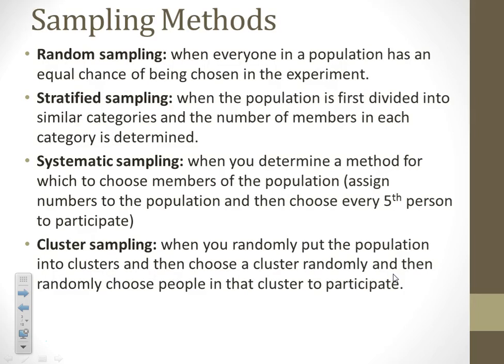There's also convenient sampling — selecting the sample by what's convenient. For example, standing in front of the cafeteria at lunch, since not everybody goes to the cafeteria. Or wanting to interview math students and just interviewing your own class because it's convenient. Convenient sampling doesn't come up very much because typically there's bias there.